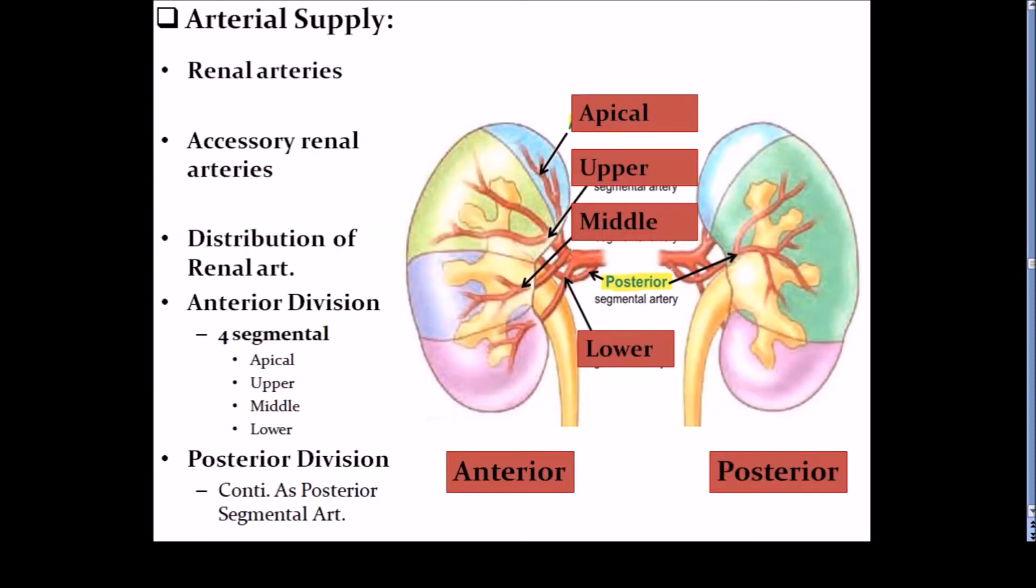Arterial supply of kidney: each kidney is supplied by renal artery. The right renal artery is longer than the left renal artery because the abdominal aorta is present on the left side. Sometimes accessory renal artery is present. This accessory renal artery arises from the aorta and this accessory renal artery supplies the upper or lower pole of kidney. It can reach the pole of kidney without passing through the hilum.